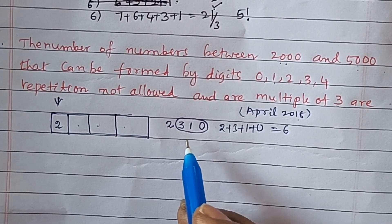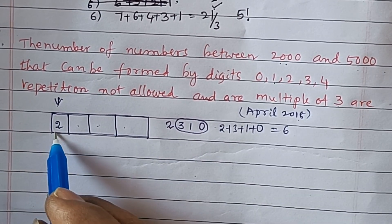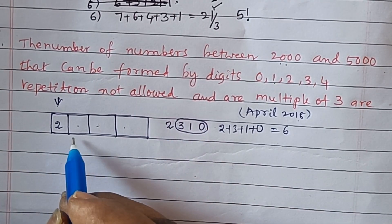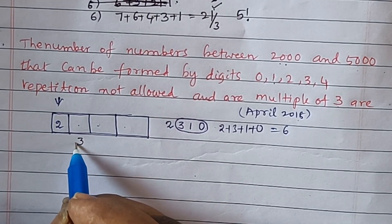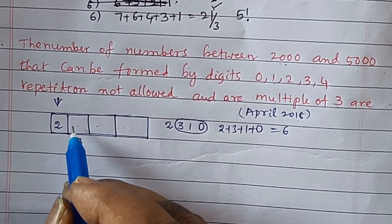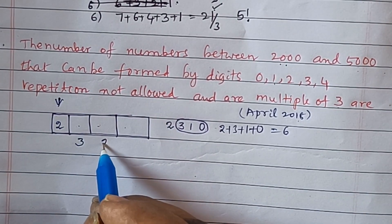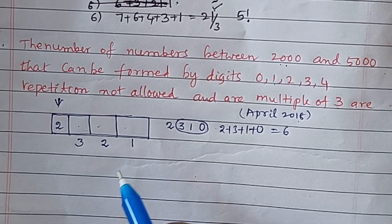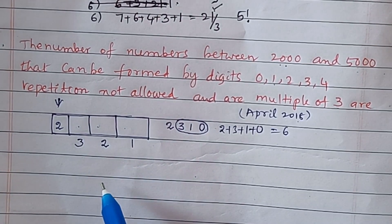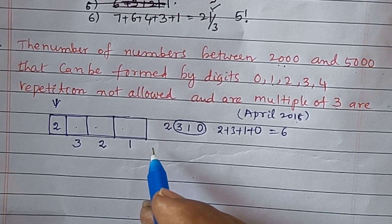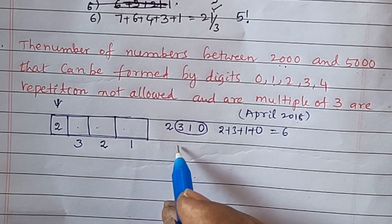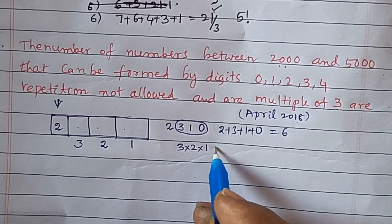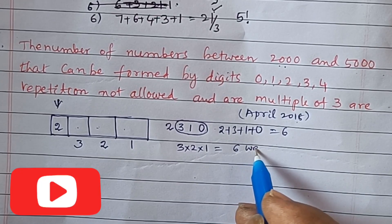Following this pattern, we fix two digits in their places. Among the remaining three digits, we fill the remaining positions: 3 ways for the first position, 2 ways for the second, and 1 way for the third. The total for this case is 3 × 2 × 1 = 6 ways.